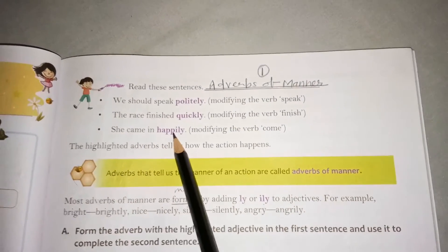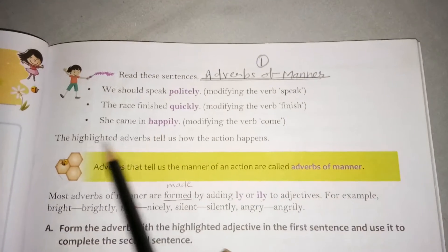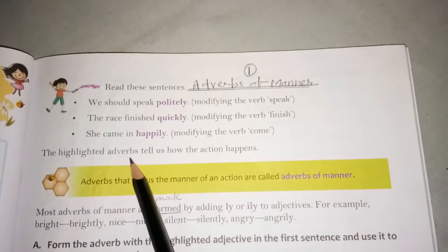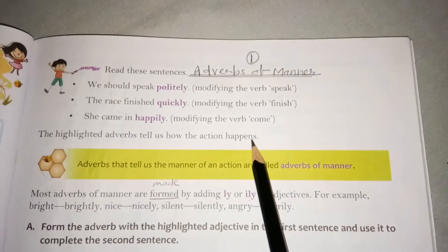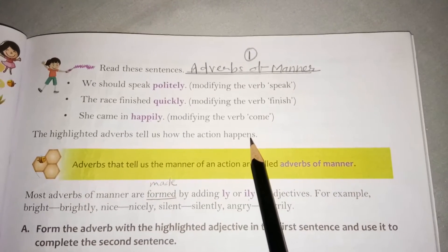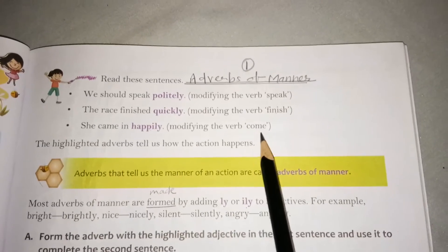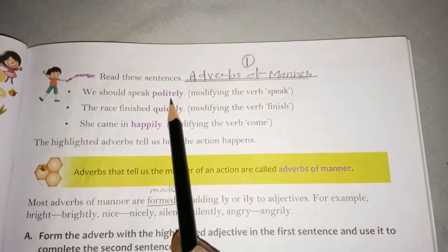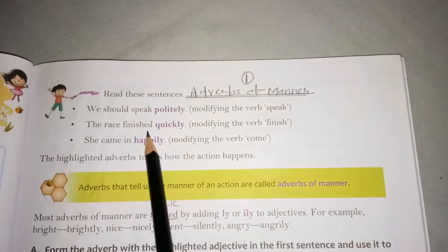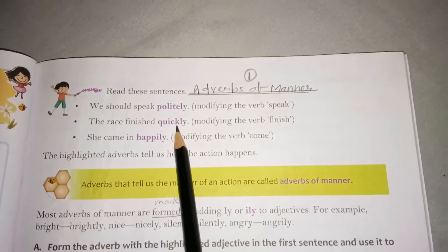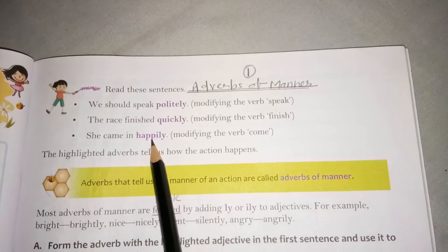She came in happily, modifying the verb 'come'. The highlighted adverbs tell us how the action happens. Children, adverbs of manner give the answer to the question 'how'. How should we speak? We should speak politely. How did the race finish? The race finished quickly. How did she come? She came happily.